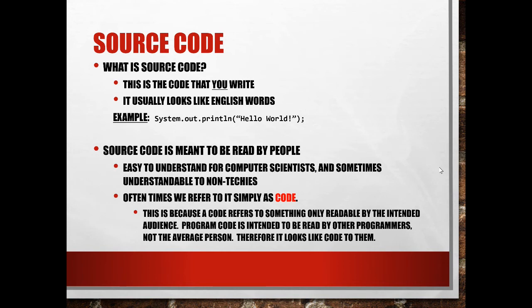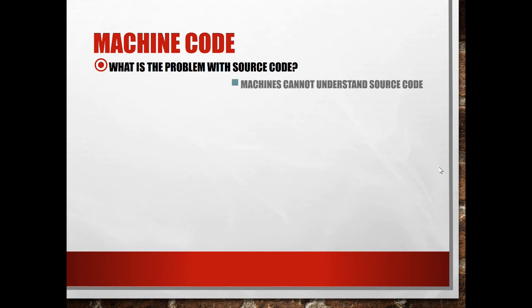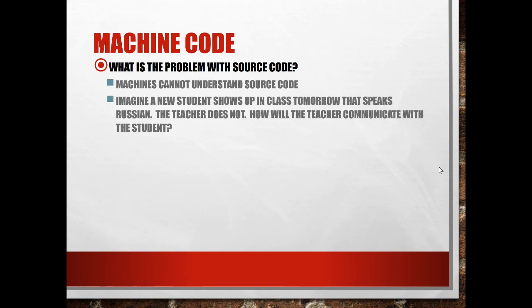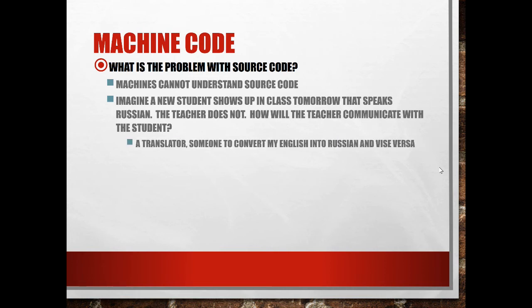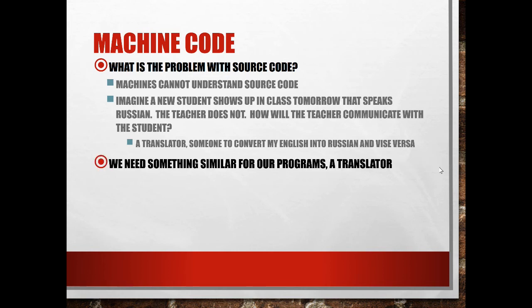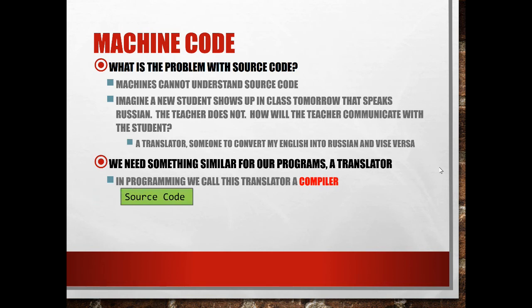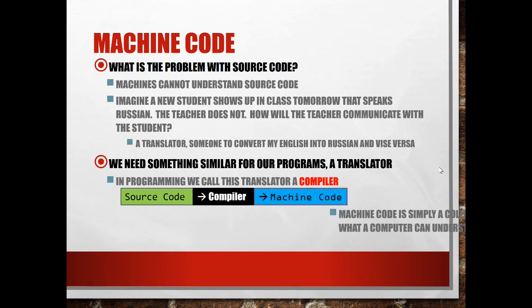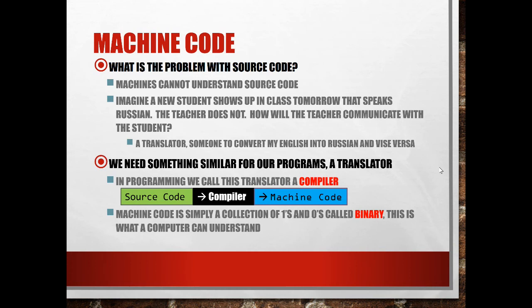The problem with source code is that machines cannot understand it — the machine does not understand the English that you type into your file. Imagine a new student shows up in class that speaks Russian and the teacher does not — a translator would be useful to convert English into Russian. We need something similar for our programs. In programming we call this translator a compiler. We take the source code, apply it to the compiler, and the compiler converts it into machine code — simply a collection of ones and zeros (binary) — which is what the computer can actually understand.